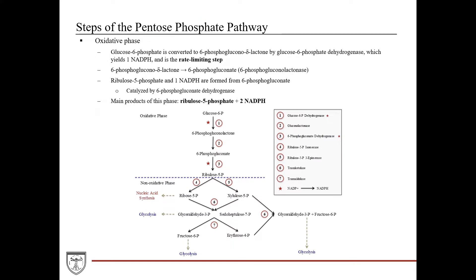In the oxidative phase, there are two really important steps. First, glucose 6-phosphate is converted to 6-phosphogluconolactone, catalyzed by the enzyme glucose 6-phosphate dehydrogenase. This reaction takes NADP+ and converts it into NADPH, so you get one NADPH from this reaction.